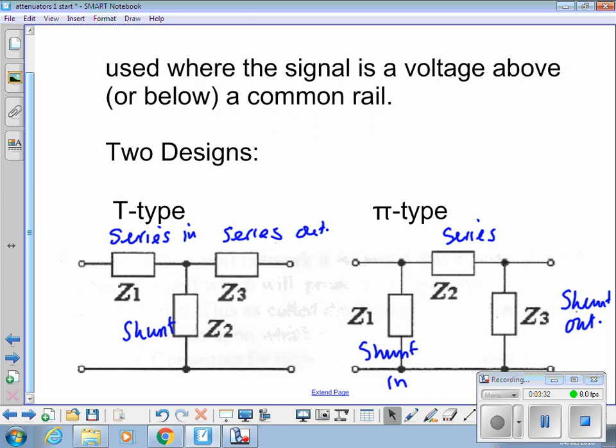Now, if you're doing unbalanced, the value of your input components, the two series resistors or the two shunt resistors on the pi-type, will be different values if the attenuator is unbalanced. So if you've got a 50 ohm input and a 600 ohm output, Z1 and Z3 on both types will be different values. And that's fairly obvious that that would be the case.